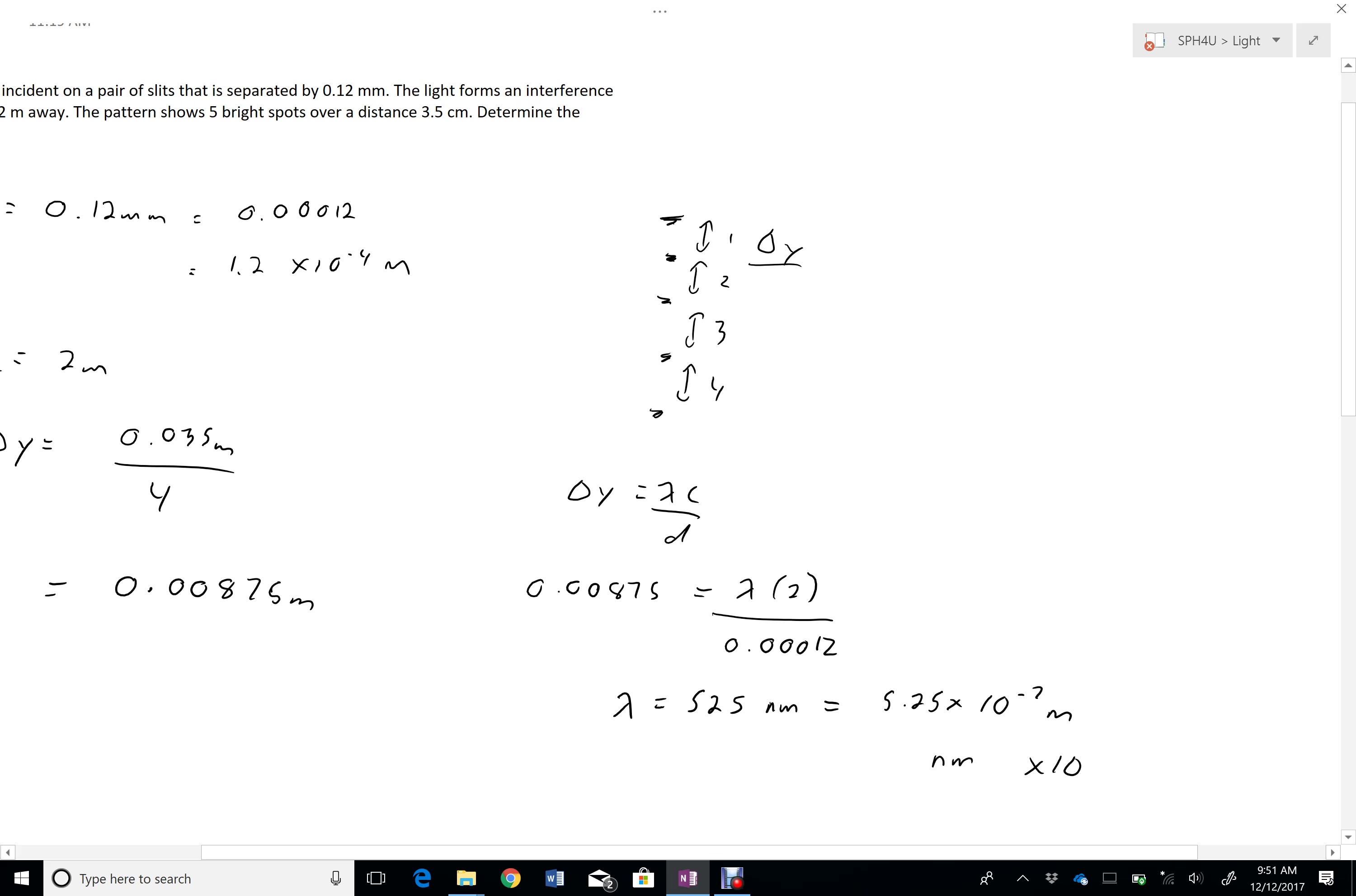Nanometers are times 10 to the negative 9. So all your visible wavelengths are going to be on this order. Typically they're stated in nanometers. And so to go from 10 to the negative 7 to negative 9, I'm going to multiply by 100. And that's why I have 525 nanometers.